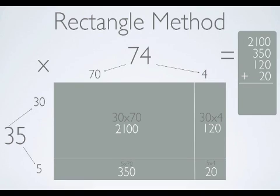What I need to do is take the smaller rectangles and put them together. If I put them together, I will have the total for the entire rectangle, which is represented by 35 times 74.